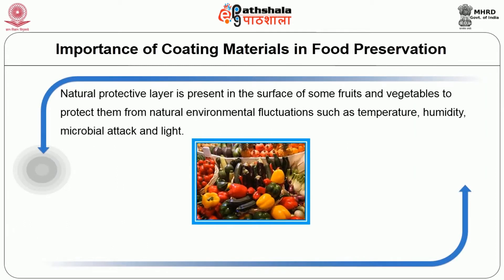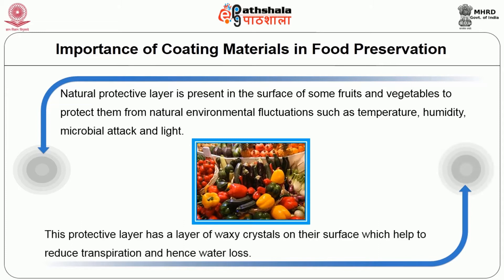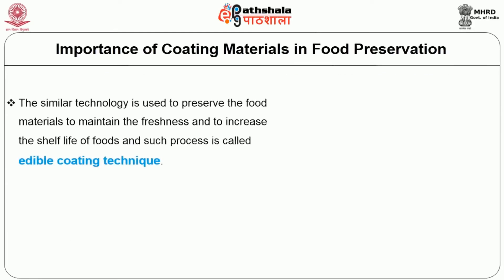A natural protective layer is present on the surface of some fruits and vegetables to protect them from environmental fluctuations such as temperature, humidity, microbial attack, and light. This protective layer has waxy crystals on the surface which helps to reduce transpiration and hence water loss. A similar technology is used to preserve food materials and maintain freshness, and such a process is called edible coating technique.